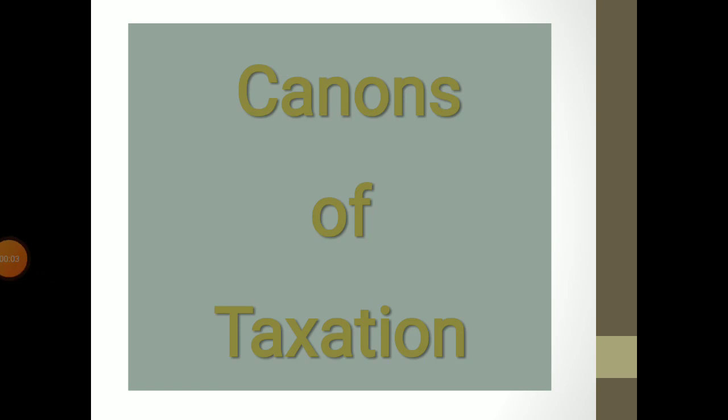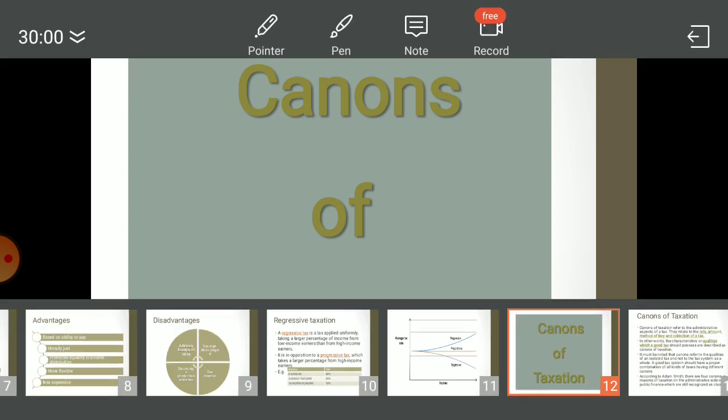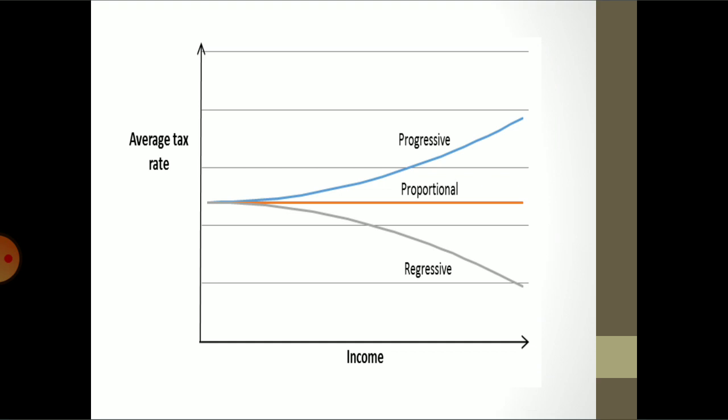Welcome to the virtual classroom of Business Environment. We are discussing Unit 3, the Indian tax system. Up till now, we have completed the types of taxation, in which we have seen that there are three types of taxes: progressive, proportional, and regressive. From this diagram, the concept regarding these three types will be clear.